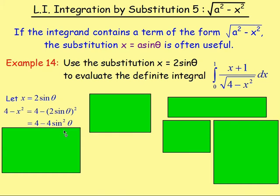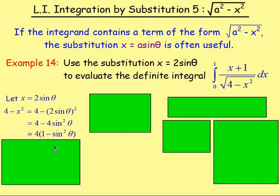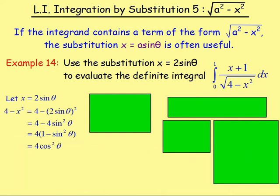We can take out a common factor of 4, giving 4 times (1 minus sine squared theta). We know that 1 minus sine squared theta equals cos squared theta. So we have the square root of 4 cos squared theta. The square root of 4 is 2 and the square root of cos squared theta is cos theta, so that gives us 2 cos theta.